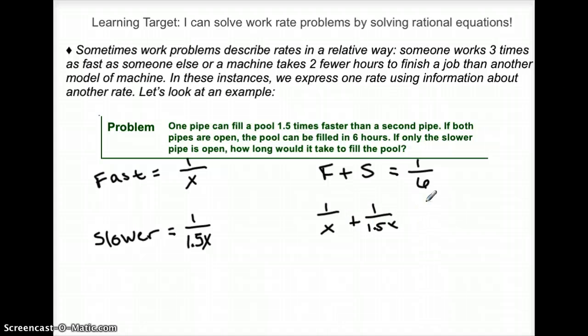So then I'm just going to plug in these individual rates. 1 over x plus 1 over 1.5x equals 1 over 6. And so I want to get them all the same. I think if I do 1.5 times 4, I can get a 6. So I'm going to make all these fractions have 6x at the bottom.